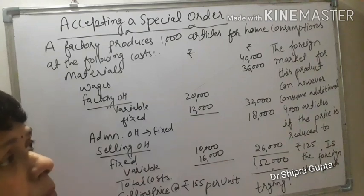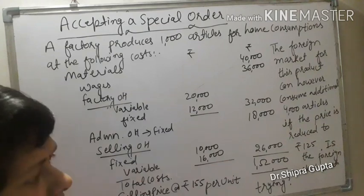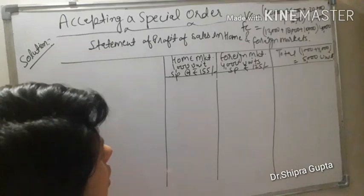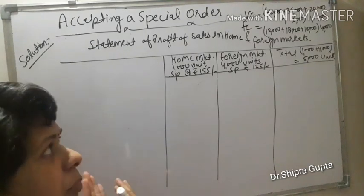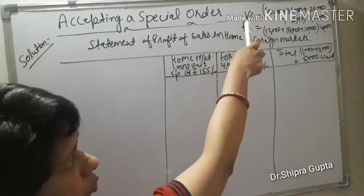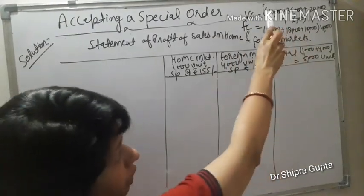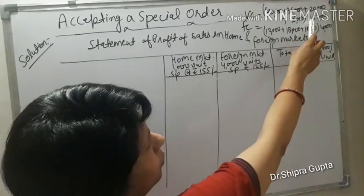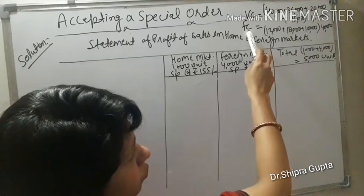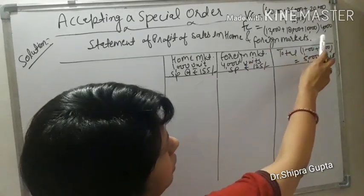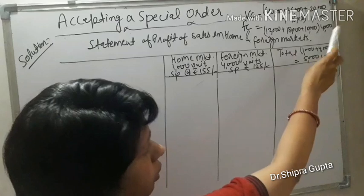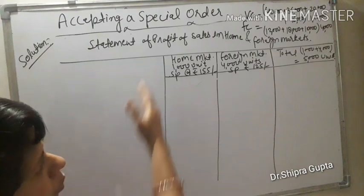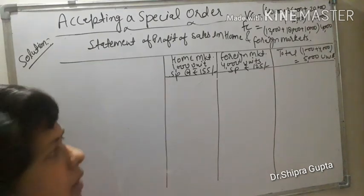We need to decide whether to accept the proposal of the foreign market or not, and we will solve this question. As per the given data, we separate variable cost and fixed cost. Variable costs are: materials ₹40,000, labour ₹36,000, factory overhead variable ₹20,000, and selling variable ₹16,000, totalling ₹1,12,000 for 1000 units. Fixed costs are: factory ₹12,000, administration ₹18,000, selling ₹10,000, totalling ₹40,000. We will prepare a statement of profit for home and foreign markets.